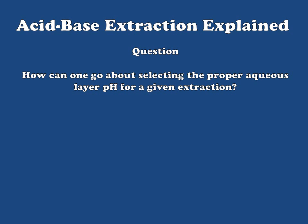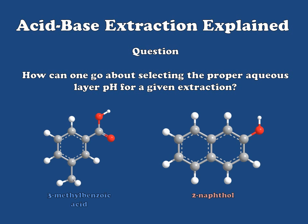In order to do this, we're going to look at an example system consisting of two compounds: 3-methylbenzoic acid, which is an aromatic organic acid, and 2-naphthol, which is an aromatic alcohol. These two compounds have different acidities and therefore will release their acidic protons under differing conditions. We're going to look at how we can use this behavior to our advantage to separate a physical mixture of the two.